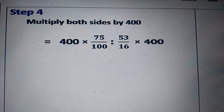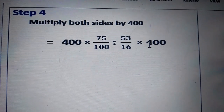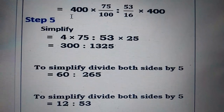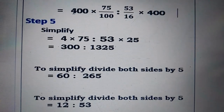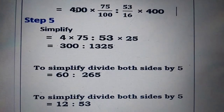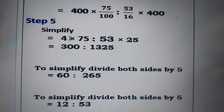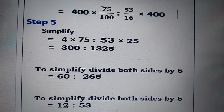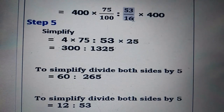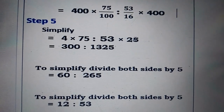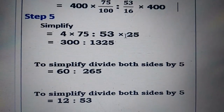Multiplying four hundred on both sides gives us: four hundred multiplied by seventy-five by hundred, ratio fifty-three by sixteen multiplied by four hundred. In step number five, we simplify. Four hundred divided by hundred gives four, so we get four multiplied by seventy-five. On the right side, four hundred divided by sixteen gives twenty-five, so we get fifty-three multiplied by twenty-five.